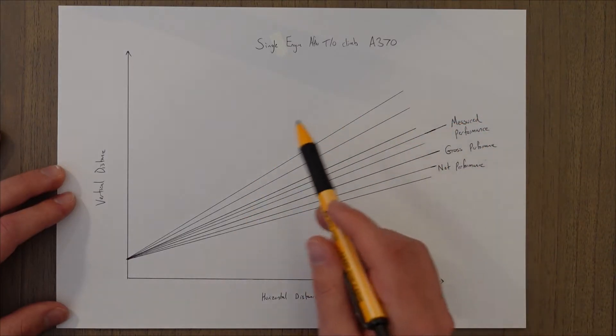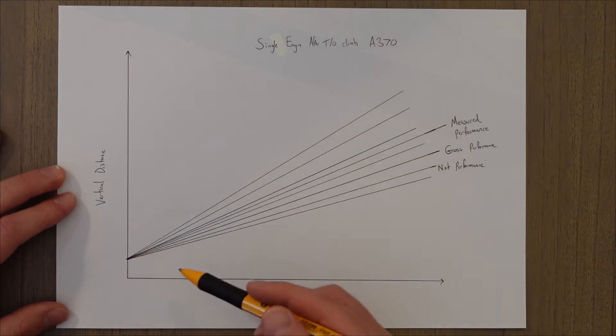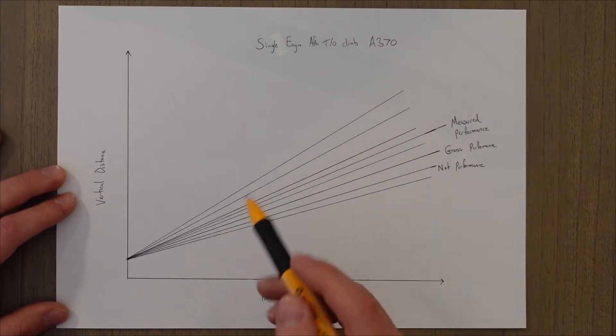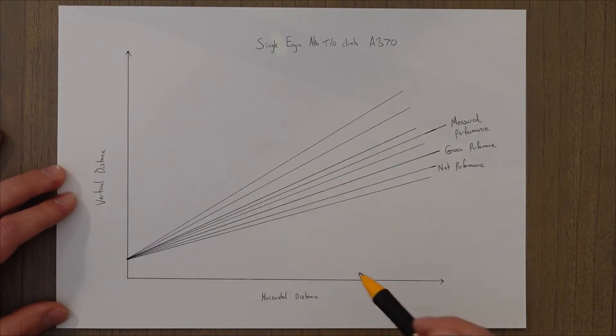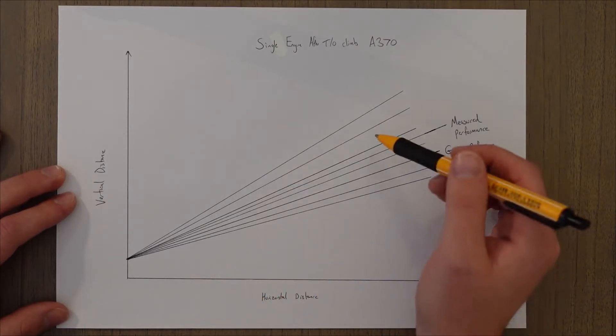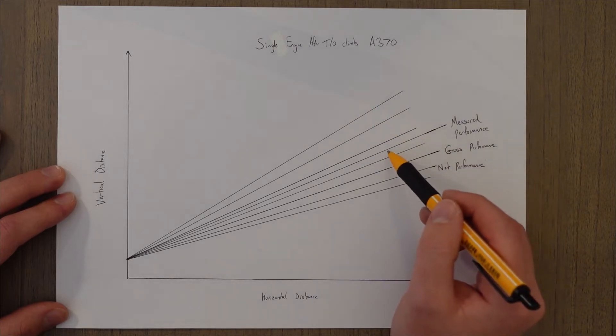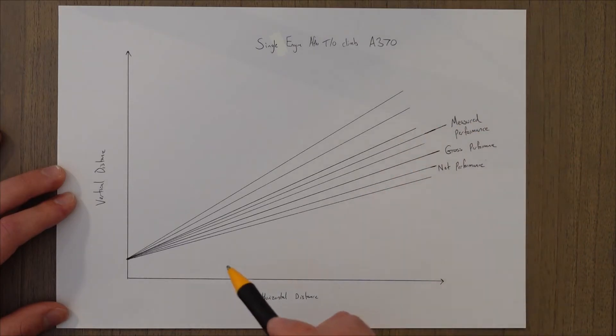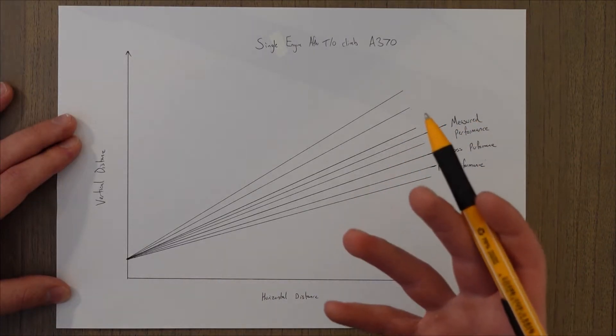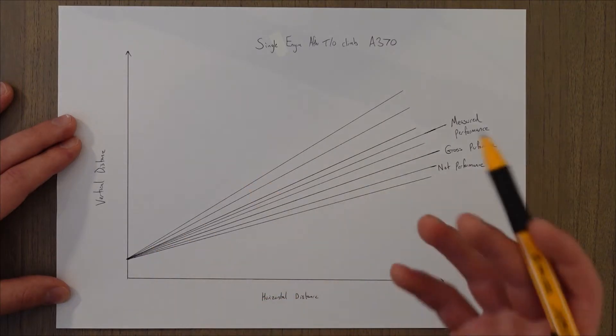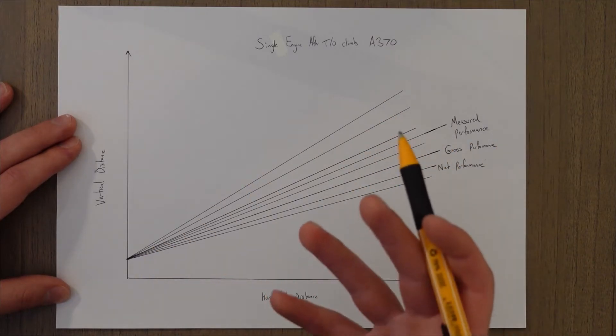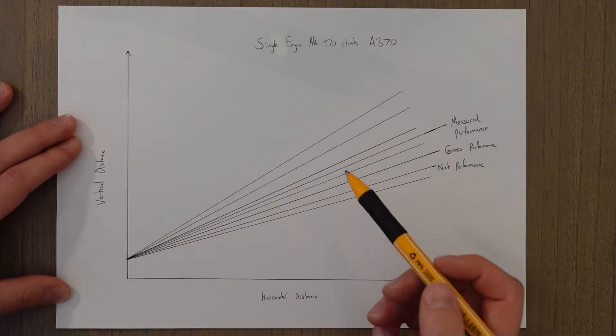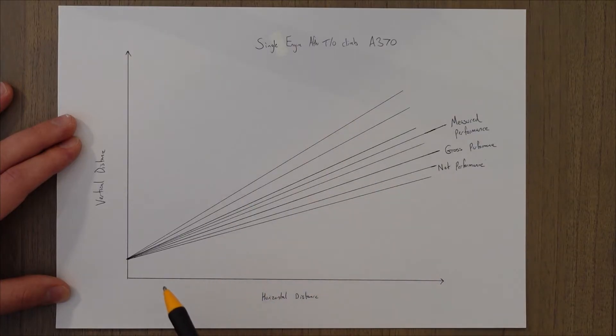This graph here, for example, shows the measured after takeoff single engine climb performance for a brand new Airbus A370 aircraft that we've just invented and we're trying to get certified. There are loads of lines, but the average line is about here, and that is the measured performance flown by test pilots. Unfortunately, we're not all test pilots flying brand new A370s. Test pilots are highly skilled pilots that are used to flying the aircraft in unusual situations such as single engine.